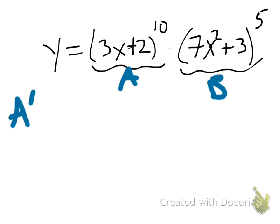So if I do that, my A prime is 10, 3x plus 2 all raised to the 9th, and the chain rule of what's inside there is 3.